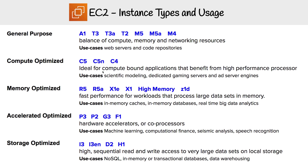Then you have memory optimized. As the name implies, it's going to have more memory on these servers — fast performance for workloads that process large data sets in memory. Use cases include in-memory caches, in-memory databases, and real-time big data analytics.